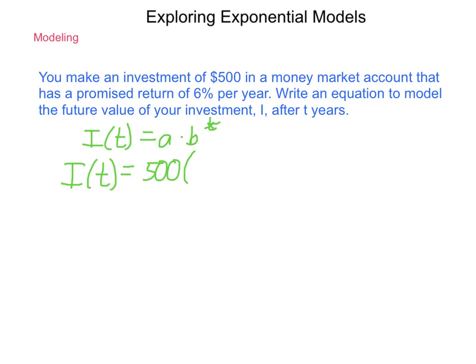And then b is our growth or decay. Since we're getting a rate of return, money's coming back to us at 6% per year. We always start with 1 when talking about money, because if you multiply by 1, you get to keep it. In this case, we're adding more money to it. So, we get 1 plus 6% is 0.06. So, adding that together, we get 1.06 to the t. We now have our equation.